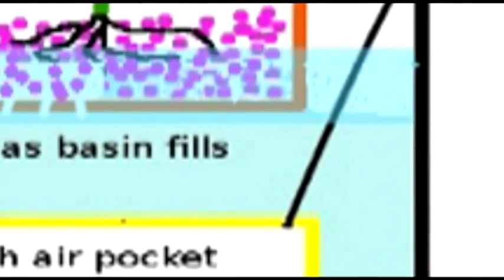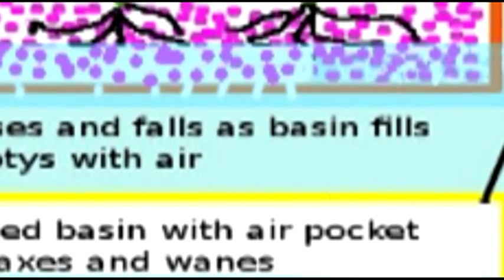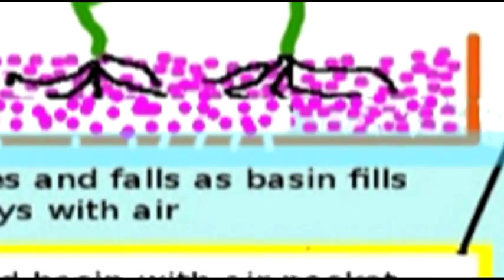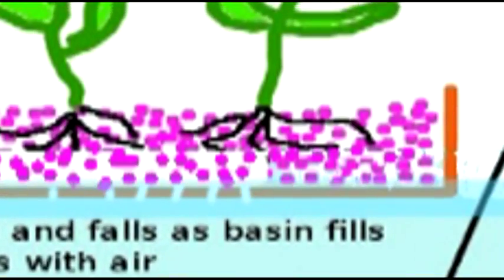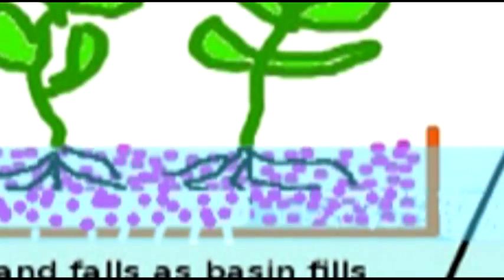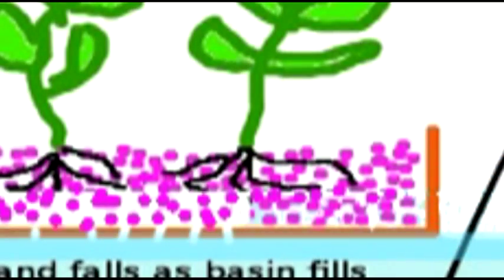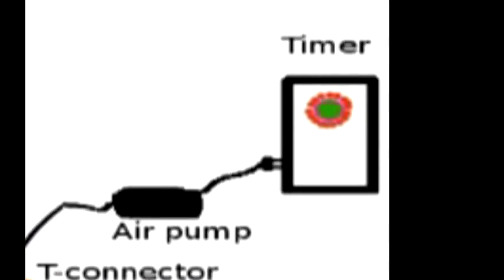The air gets pumped down here, and as it's released, the water level up here goes down. As it's pumped in again, the water level goes up, and this means that there's agitation and movement of oxygen and nutrients to the roots of the plants. The air pump has a timer.